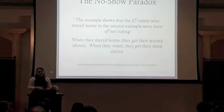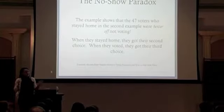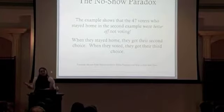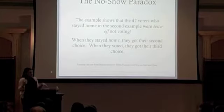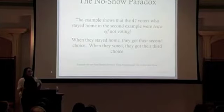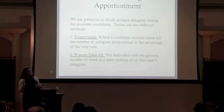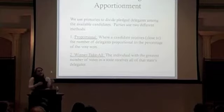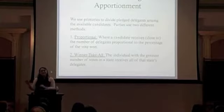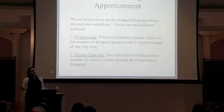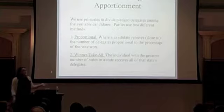Even beyond these structural problems, we make matters worse in the way we actually conduct our primaries. Primaries are used to divide delegates among the available candidates so that a winner can be determined at the national convention, and we do this in two ways. The Democrats usually use a proportional method in which the number of delegates a candidate receives is proportional to the percentage of the vote won — so if you win 40% of the vote, you get 40% of the delegates. We also have a winner-take-all method in which the individual who wins the most votes in a state gets all of that state's delegates.